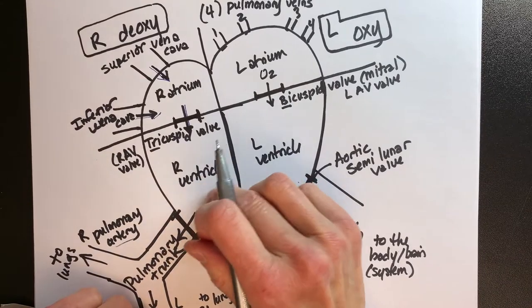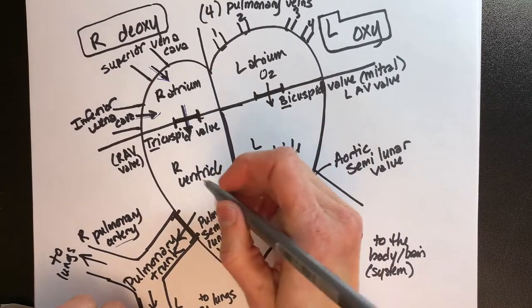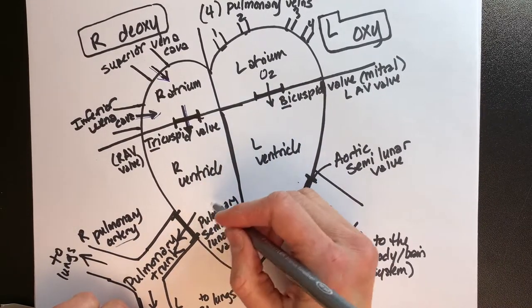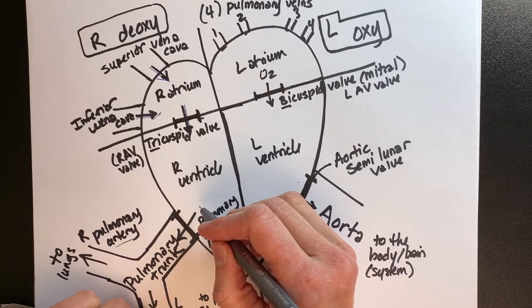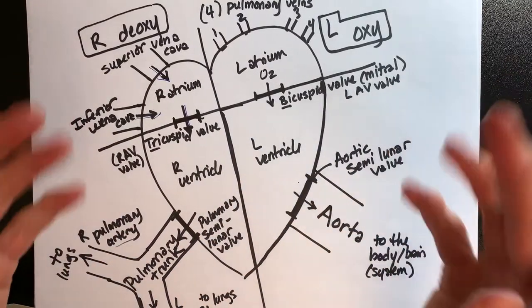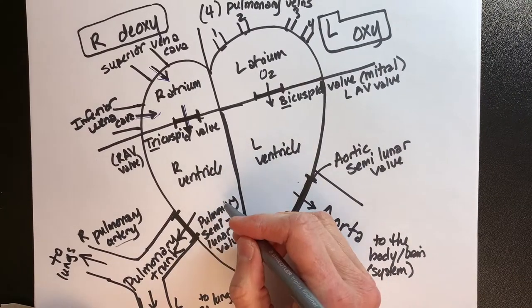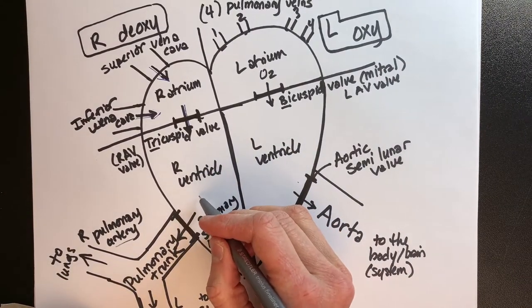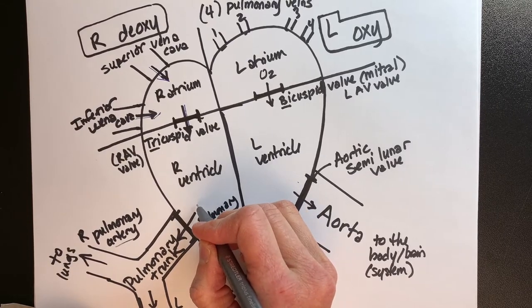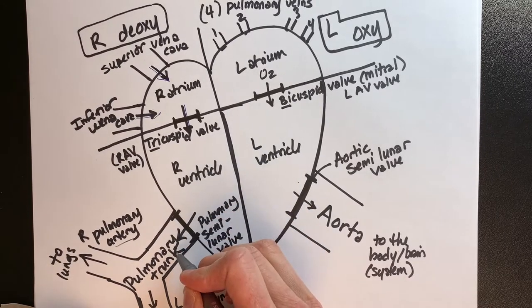Now that we're downstairs on the deoxygenated side, we're in the right ventricle, which is not very big. It doesn't have far to pump, meaning it's just going to pump to the lungs, which are right next to the heart. We don't want to overpower the lungs. The right ventricle's blood, which is deoxygenated, is going to leave and go to the lungs.